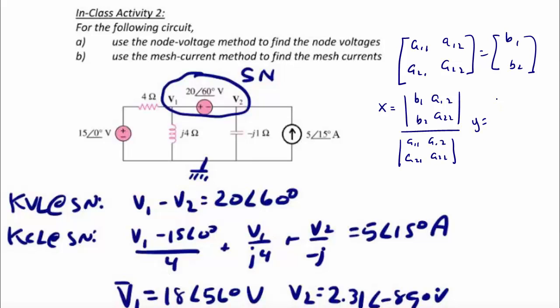Similarly, Y would be equal to the determinant of A11, B1, A21, B2 over the determinant of A11, A12, A21, A22.